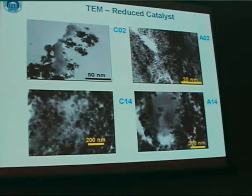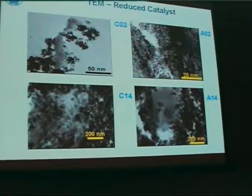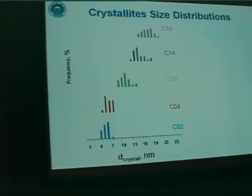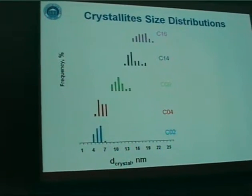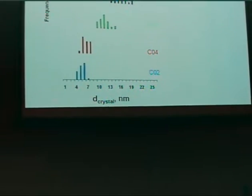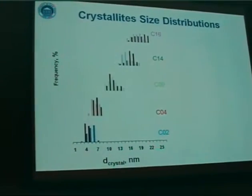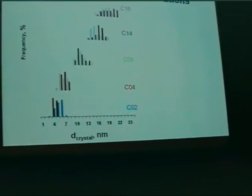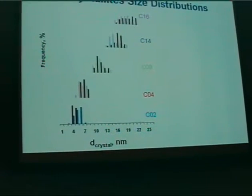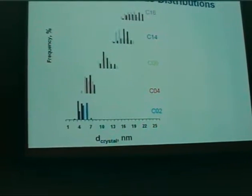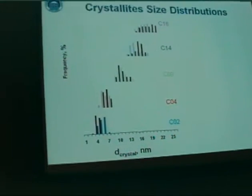It was somewhat better with the alumina series. We then evaluated those TEM pictures as well as we could. This shows the particle size distributions obtained on the calcined material, and this is the distribution obtained after reduction. The crystallite size after reductive pretreatment has not changed much — apparently there has not been much sintering, which is good news.